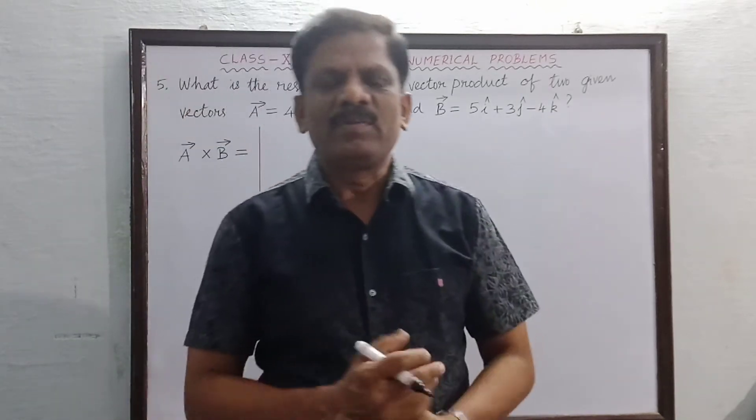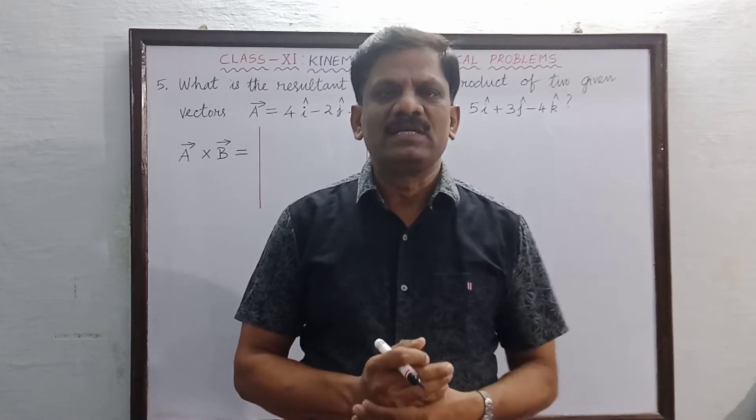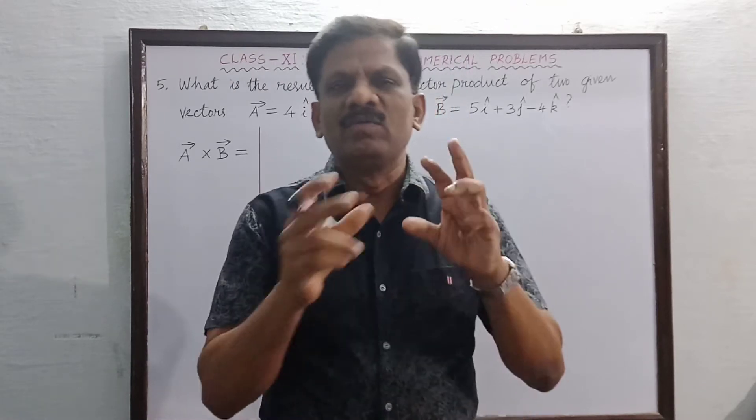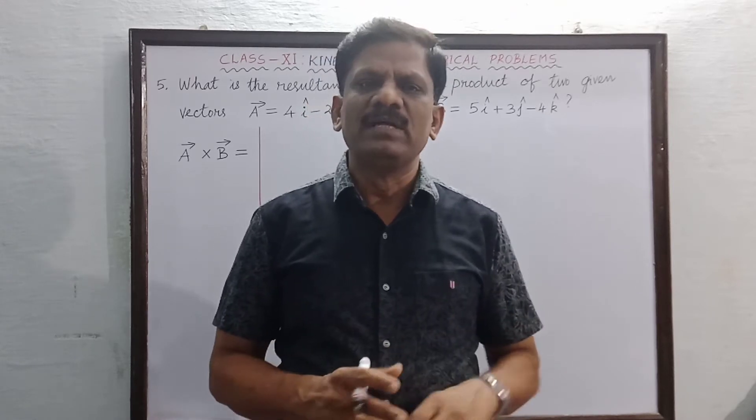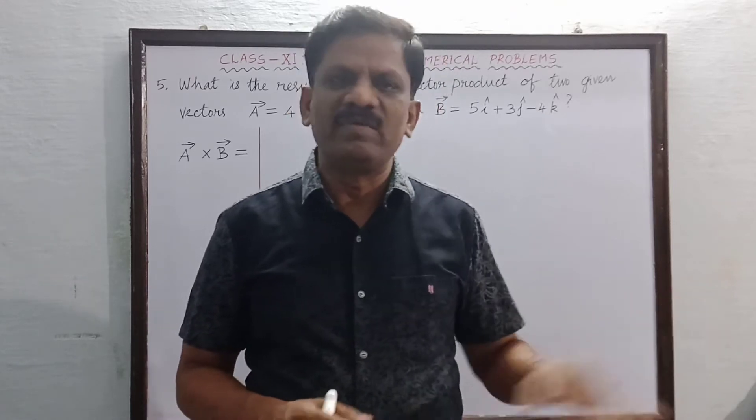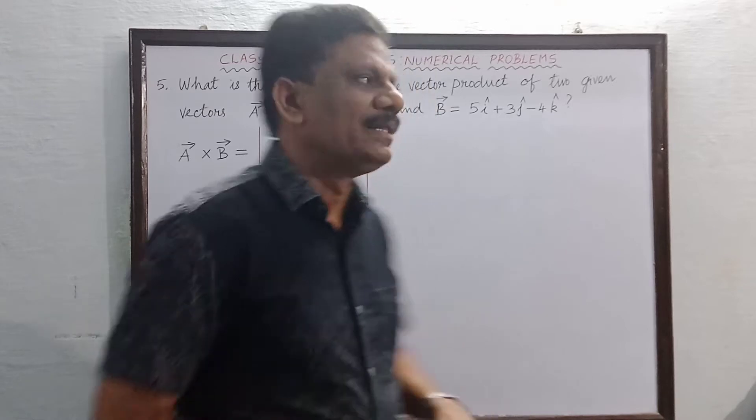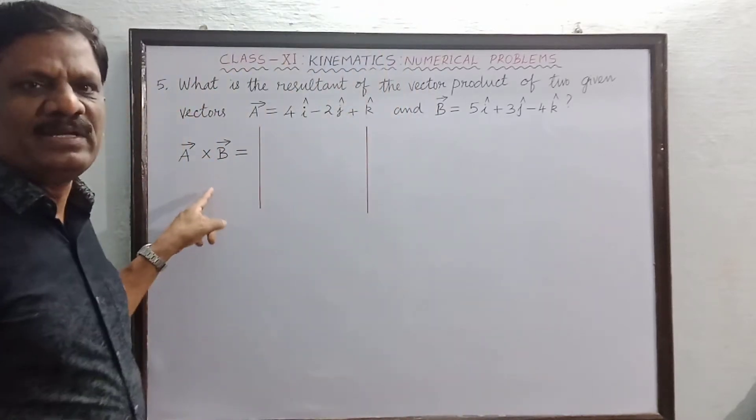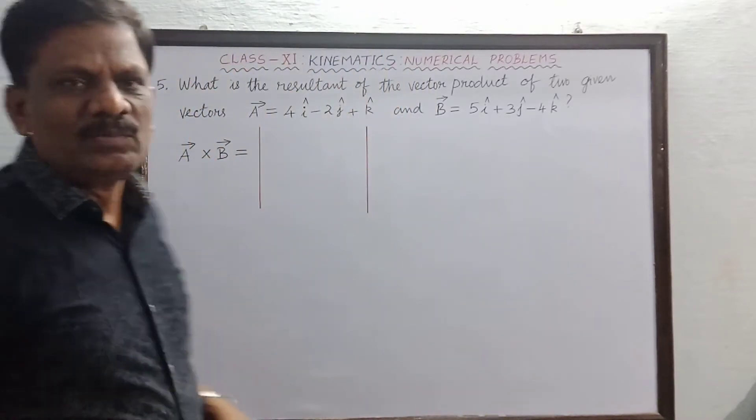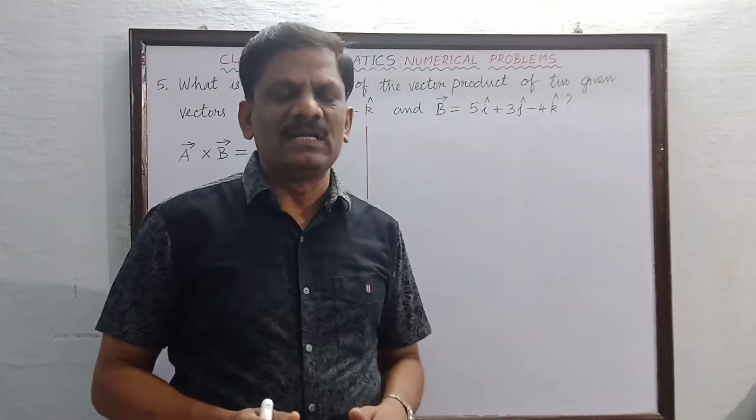Now vector product, that means cross product. One vector multiplied by another vector, the resultant is a third vector. So how do we write A cross B like this? The vector is determined by the first method.